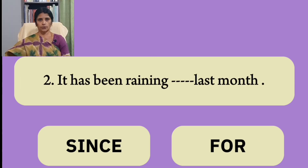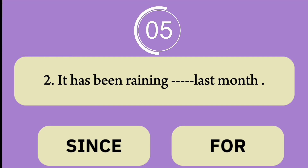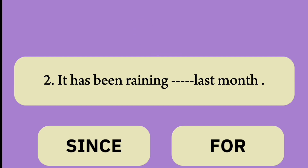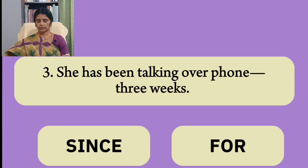Number two: 'It has been raining ___ last month.' Number three: 'She has been talking on her phone ___ three weeks.'